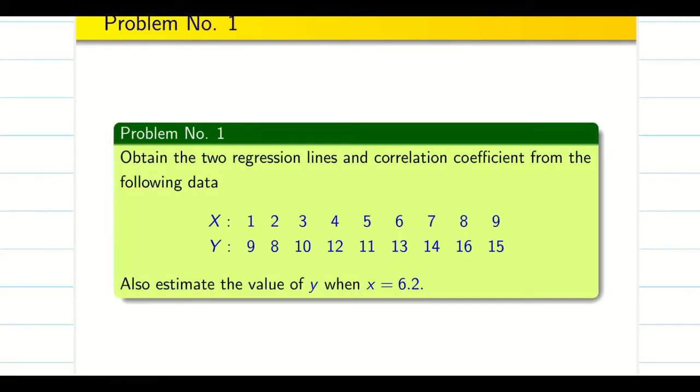The problem given to us: the raw data is given, x and y. First we have to find the regression line, then the correlation coefficient. Finally, we have to estimate the value of y for x equal to 6.2. Let us go.